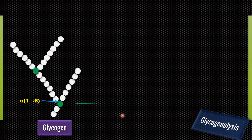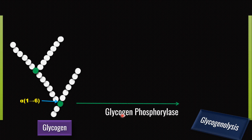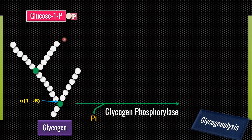The rate-limiting enzyme for breakdown of glycogen is Glycogen phosphorylase. It requires inorganic phosphate. Glycogen phosphorylase removes glucose one by one from the non-reducing end of the glycogen molecule as glucose-1-phosphate. The phosphate comes from inorganic phosphate.